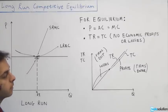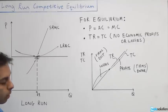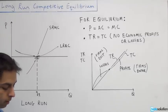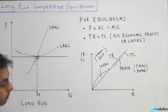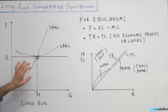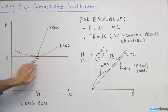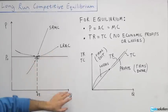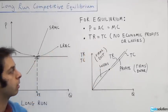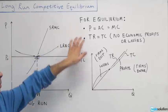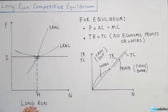Part C says economic profits equal zero, which just reinforces what was said before. The last part says all of the above are correct — and that is our answer. Price equals average cost in the long run, total revenue equals total cost, and economic profits equal zero are all conditions of our long-run equilibrium situation. The answer is D.